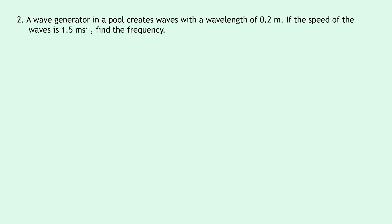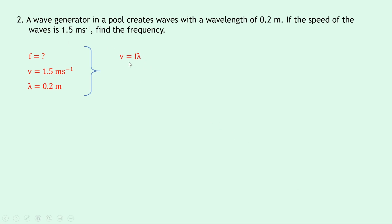Question two says a wave generator in a pool creates waves with a wavelength of 0.2 meters. If the speed of the waves is 1.5 meters per second, find the frequency. We have v = 1.5 meters per second and wavelength = 0.2 meters. Our equation is v = fλ, but we need to rearrange for frequency by dividing both sides by the wavelength, giving f = v/λ. Substituting in: 1.5 divided by 0.2 gives 7.5 hertz.